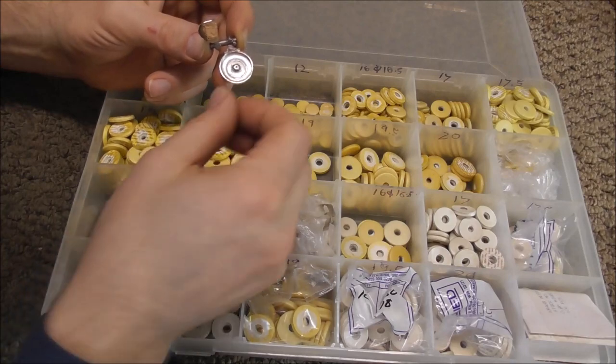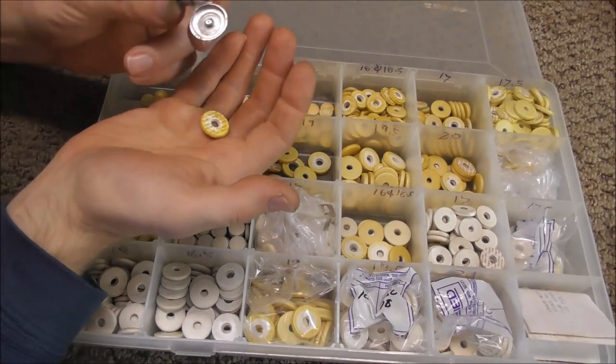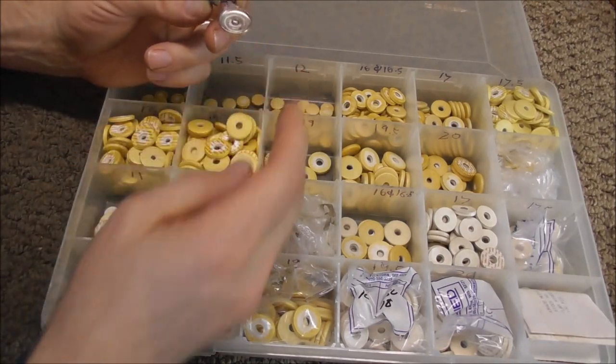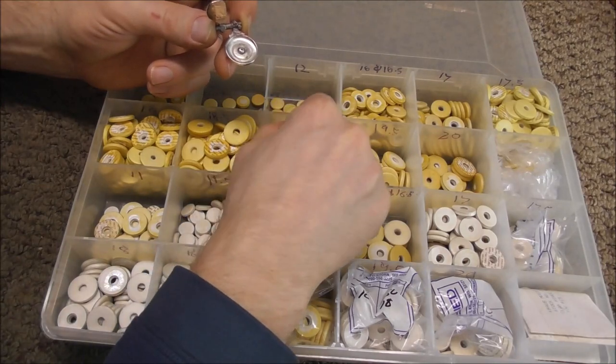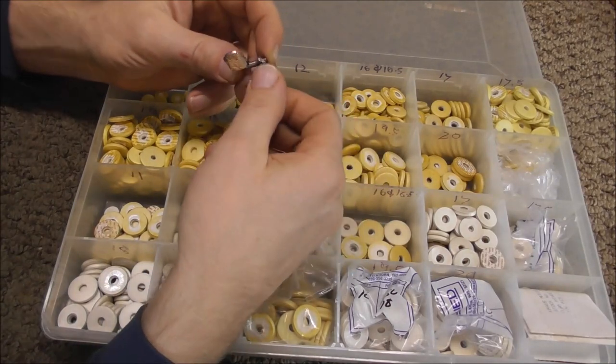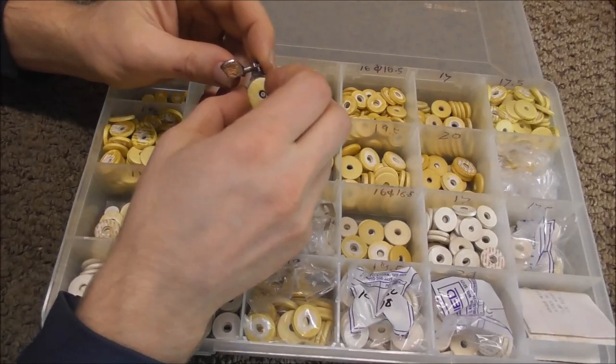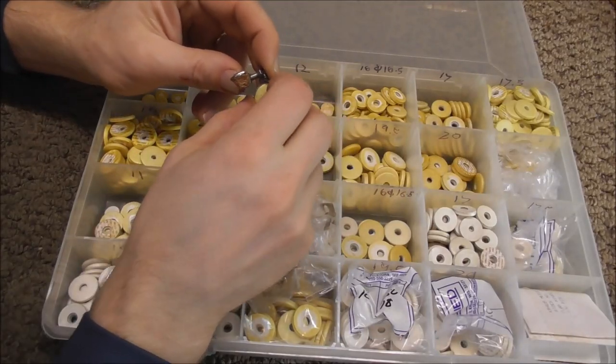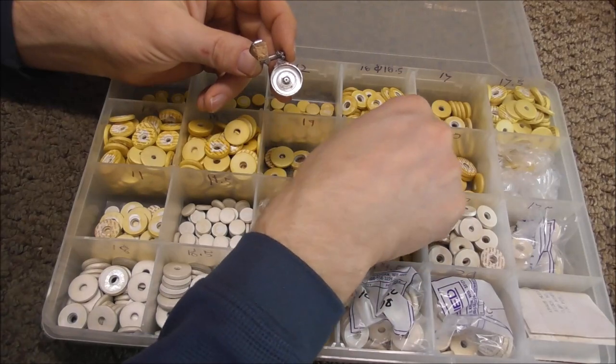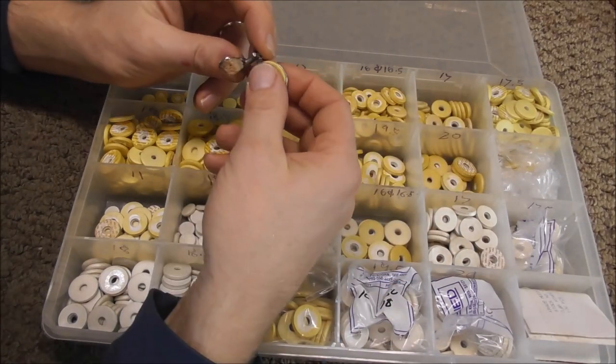To get the right size pad, you put one in there and if it falls out when you turn it upside down, that one is too small, so go to the next size up. And this one, it doesn't come out. It seems to be good. It should fit in there tightly, but not so tight that it causes the skin to warp.